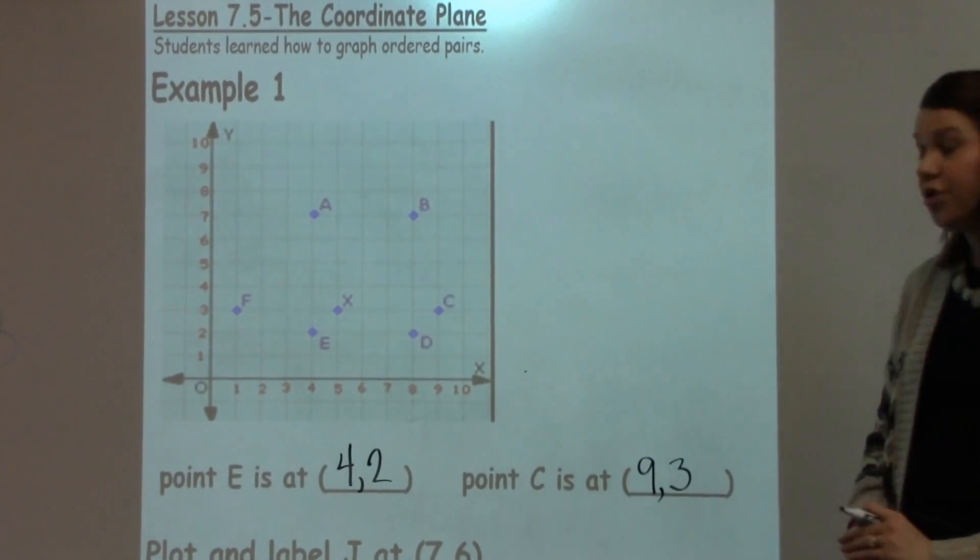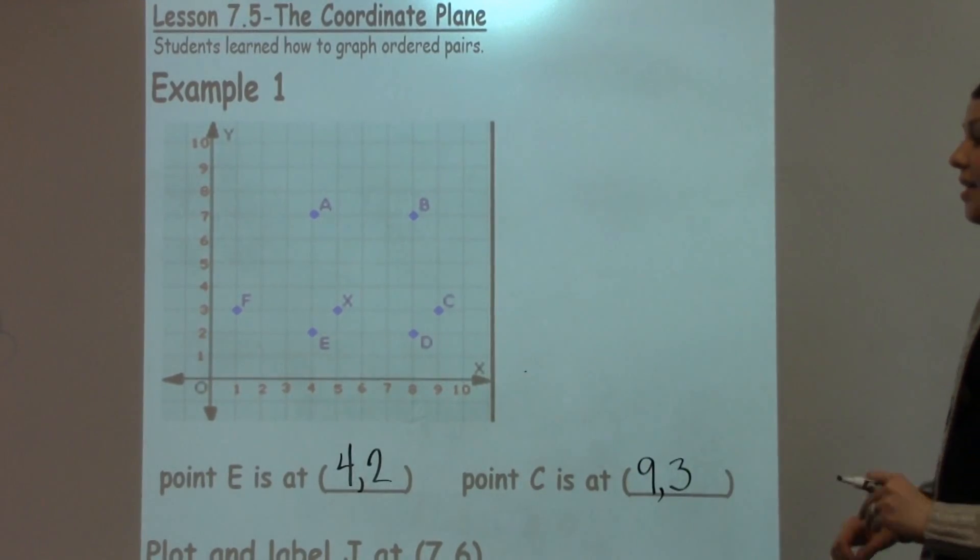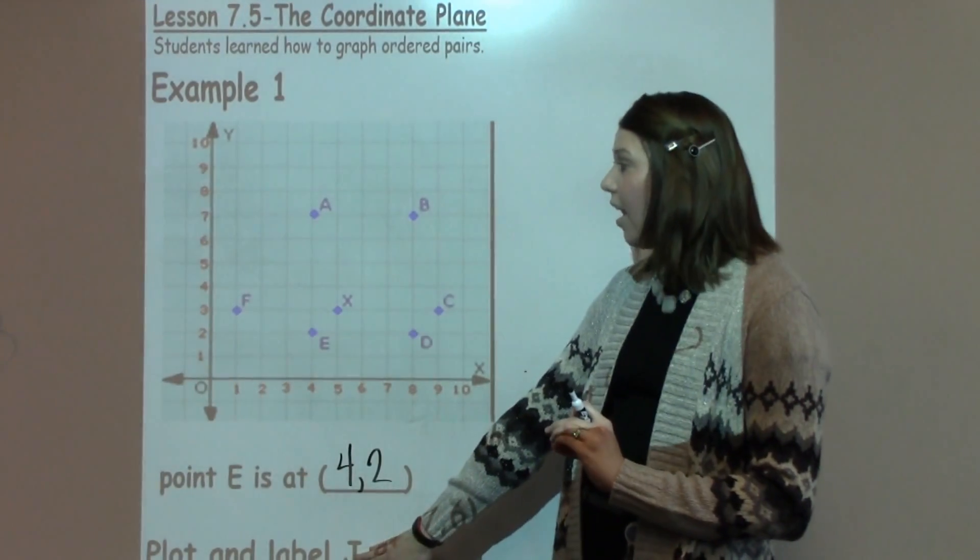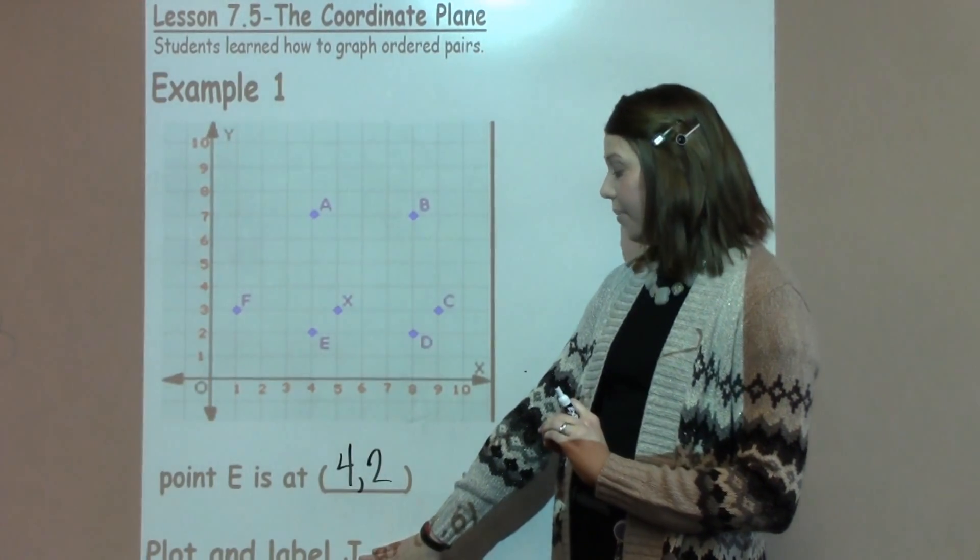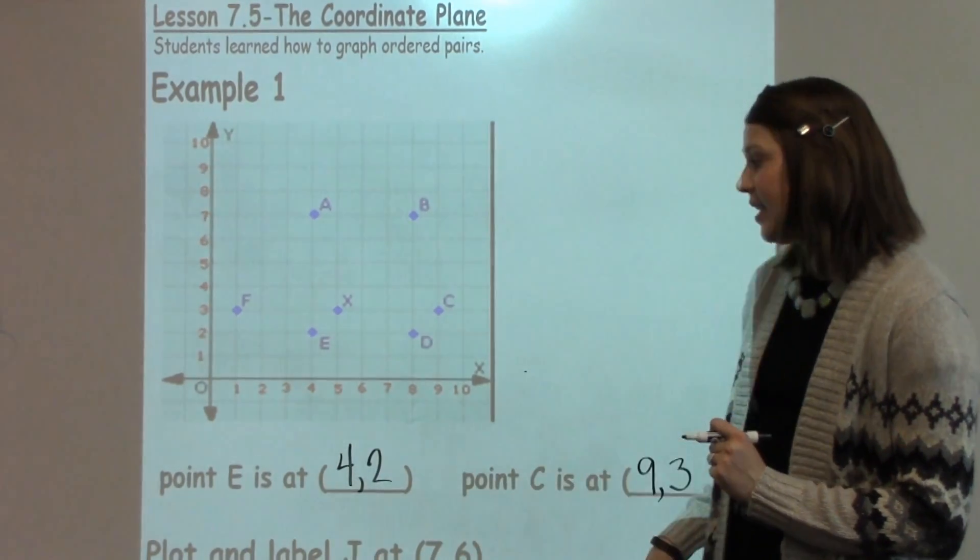I also have parentheses to show that it is an ordered pair. Now, this last step is to plot something on the coordinate plane. I'm going to plot J at 7, 6.